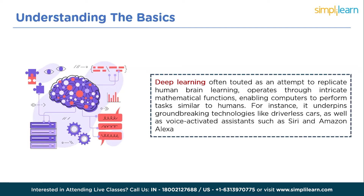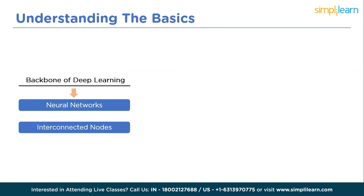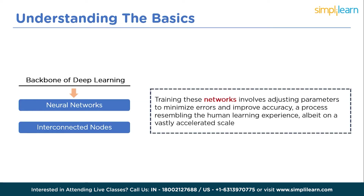Through this process, computer models achieve remarkable accuracy, occasionally surpassing human-level performance. It's not just about mimicking human cognition — it's about harnessing immense computational power to process vast amounts of data and extract meaningful patterns. The backbone of deep learning consists of neural networks: interconnected nodes that process data through layers, each layer refining the representation of the data. Training these networks involves adjusting parameters to minimize errors and improve accuracy, a process resembling human learning but on a vastly accelerated scale.